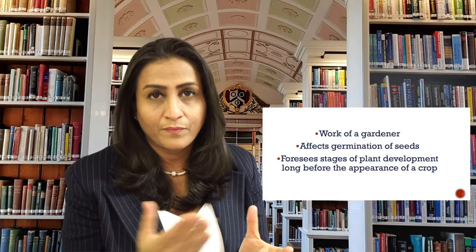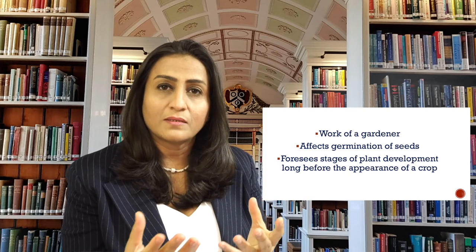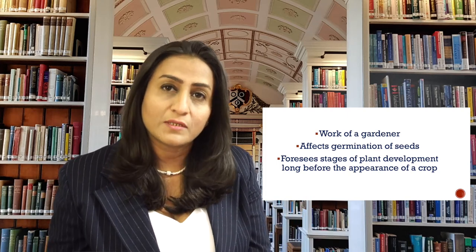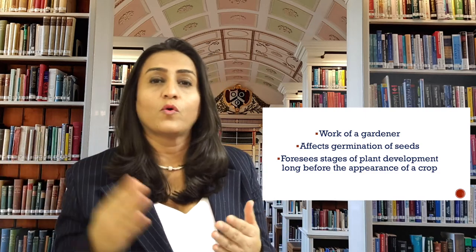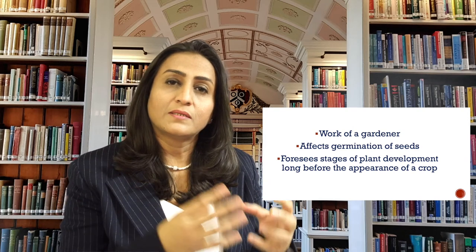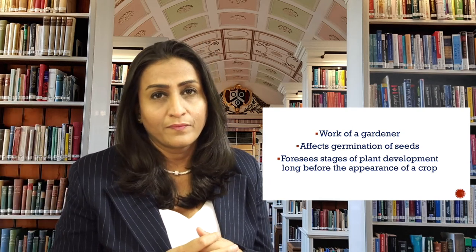Let's take an example of gardening. What a gardener does affects germination of seeds and plants. A gardener can foresee the stages of plant development long before seeing a seed grow into a plant. The focus is to create situations or environment for the seed to develop — for example, regulating moisture or selecting and mixing soils and fertilizers for its growth.